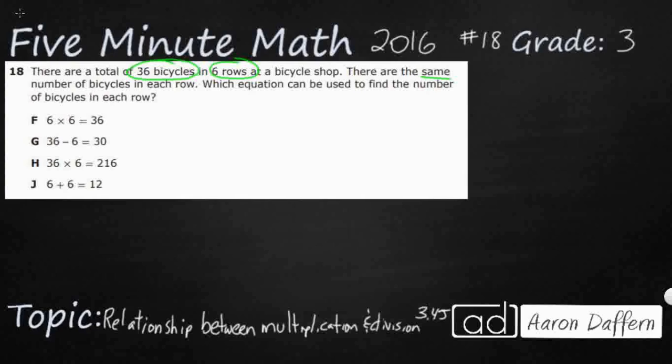So we've got two keys here: same number, and then we're going to see this word each come up a few times. So whenever we get same number or each, that's going to give us a clue that we are dealing with equal groups. The same number, equal groups, the same amount. That's very big.